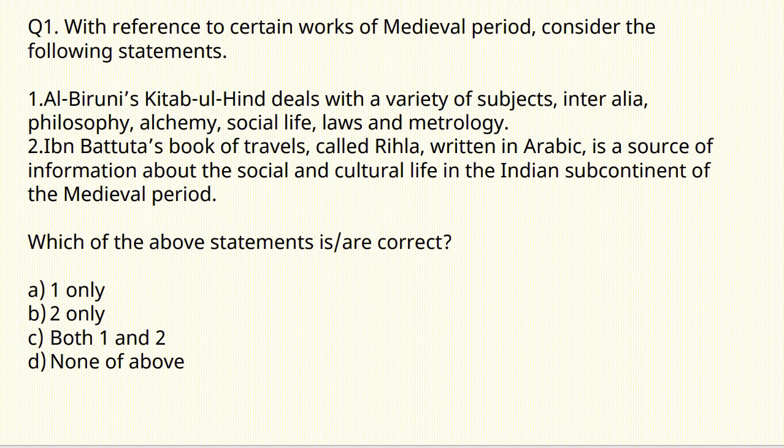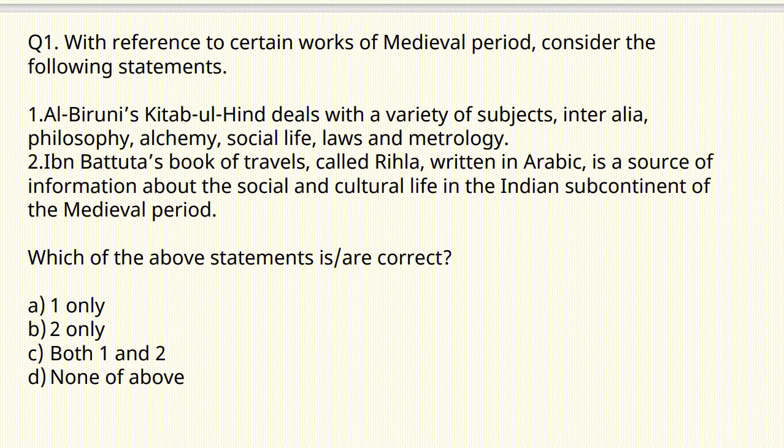With reference to certain works of the medieval period, consider the following statements: Al-Biruni's Kitab-ul-Hind deals with a variety of subjects — philosophy, alchemy, social life, laws, and metrology. Ibn Batuta's book of travels called Rihla, written in Arabic, is a source of information about social and cultural life in the Indian subcontinent of the medieval period. The correct answer is C — both statements 1 and 2 are correct.